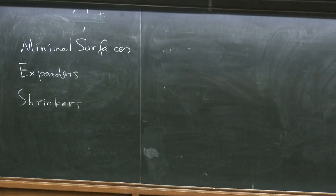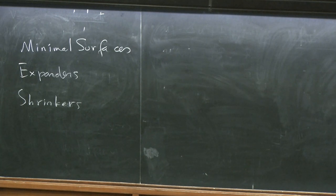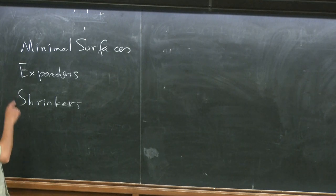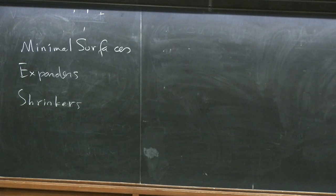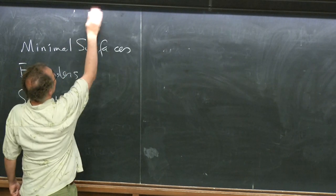For mean curvature flow, we'll discuss minimal surfaces, expanders, and shrinkers. These are self-similar solutions of the type we looked at yesterday. The point is to create examples that illustrate the theory or show that certain things happen.